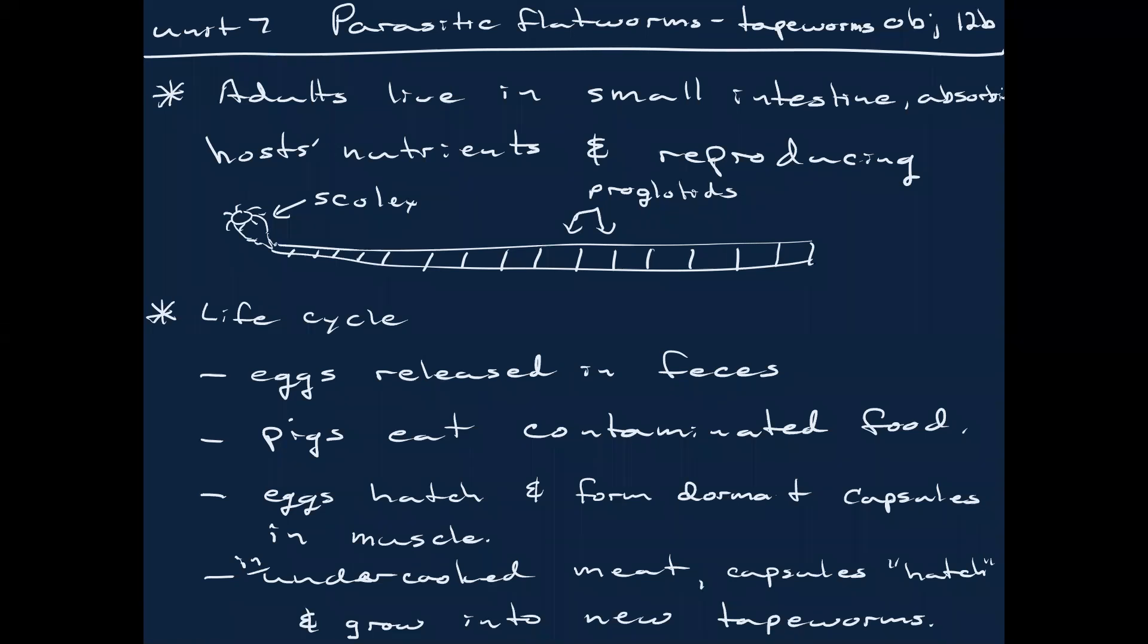So, tapeworms. Tapeworms, the adults live in the small intestine, absorbing the host nutrients and reproducing. It turns out that basically, tapeworms just lay in the small intestine. They don't need a digestive tract because they're in your digestive tract where the food is being broken down. They can just absorb it. They don't need a muscle system because they don't move. They just sit there as the food is pushed by. So, basically, it turns out the tapeworms are one enormous reproductive machine and a head-like structure to hang on for dear life.